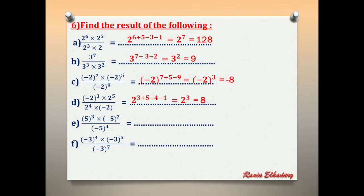Letter E: 5^3 × (negative 5)^2 over (negative 5)^4. Look at powers of negative 5: power 2 is even — cancel negative, giving 5^2. Power 4 is even — cancel negative, giving 5^4. So 5^3 × 5^2 over 5^4 = 5^(3+2−4) = 5^1 = 5.